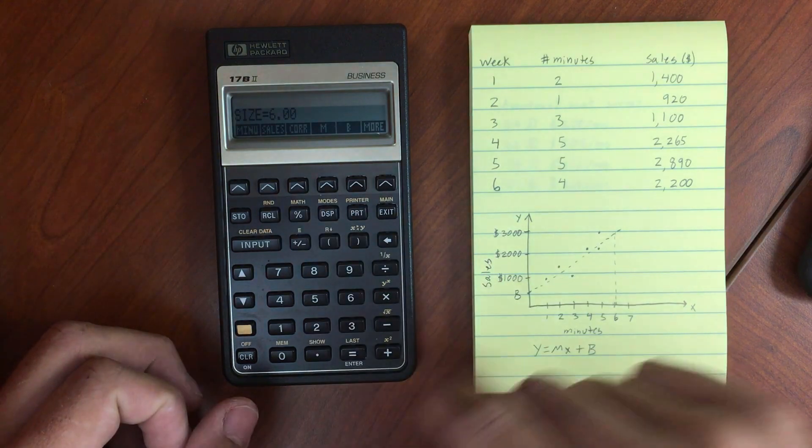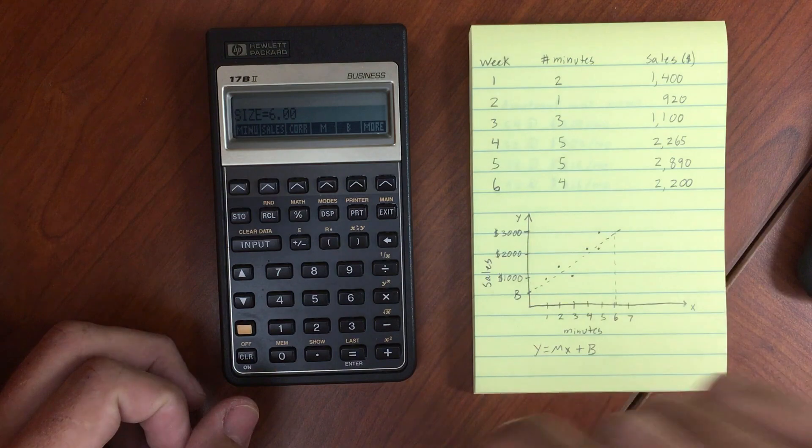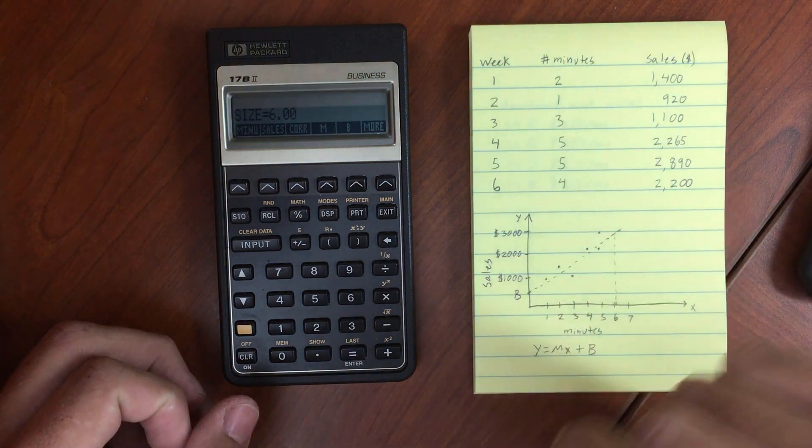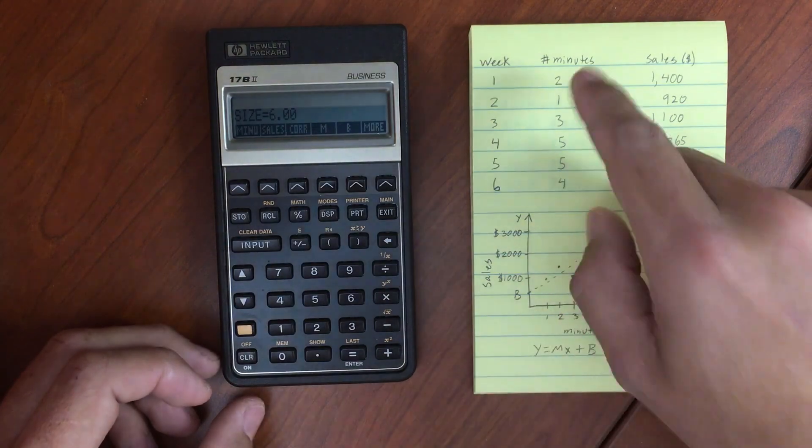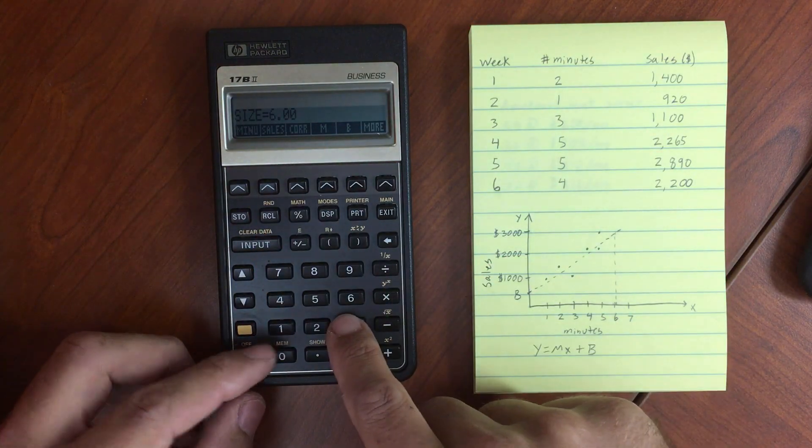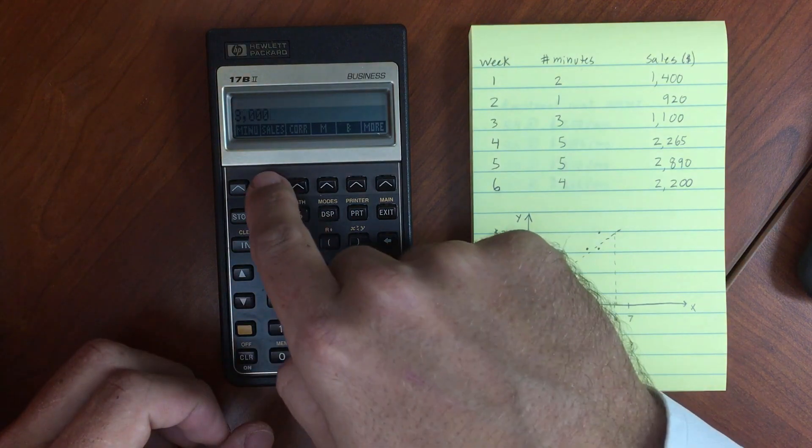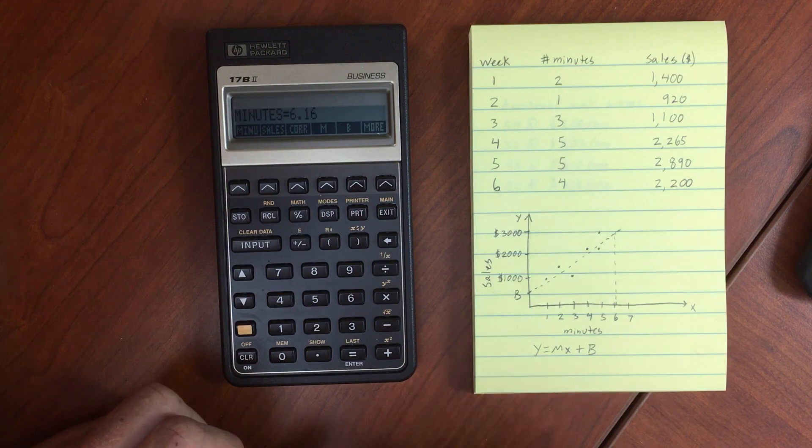Let's go back to here. And what we wanted to do was figure out, if we want $3,000 worth of sales using this linear fit prediction model, this forecast model, what is the number of minutes that we would need to advertise? So we would enter in $3,000 into sales. And then press the minutes in order to figure out how many minutes. So about six minutes is what we'd need to advertise.